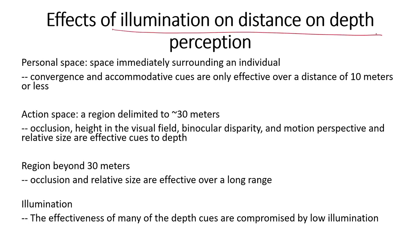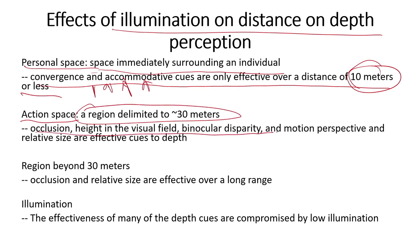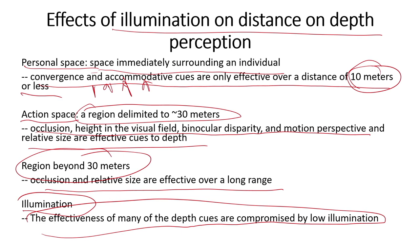Does illumination affect distance and depth perception? There are three types of spaces affected differently by illumination. Personal space — within 10 meters — is where convergence and accommodation cues of the lens are effective. Action space — up to about 30 meters — is where occlusion, height in visual field, binocular disparity, motion parallax, and relative size are helpful cues. Beyond 30 meters, occlusion and relative size are the main cues used for perceiving depth. The effectiveness of many depth cues is compromised by low illumination.